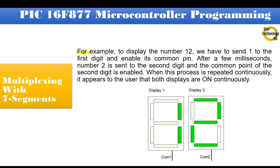For example, to display the number 12, we have to send 1 to the first digit and enable its common pin. After a few milliseconds, number 2 is sent to the second digit and the common pin of the second digit is enabled. When this process is repeated continuously, it appears to the user that both displays are on continuously.